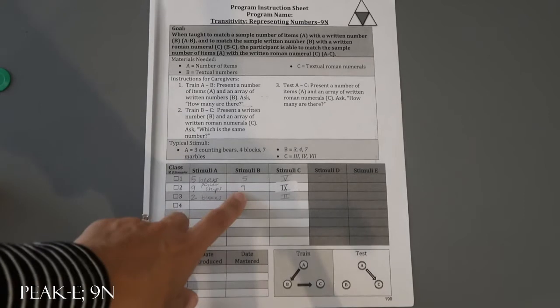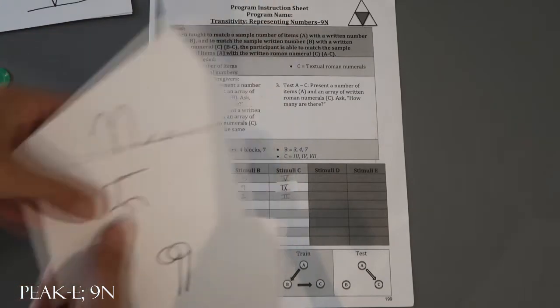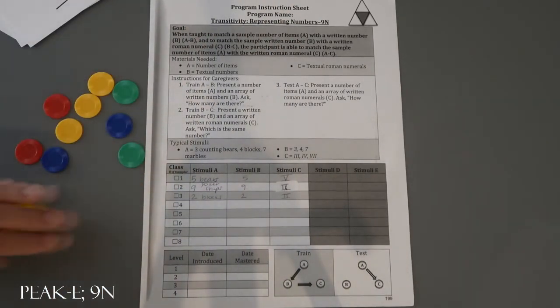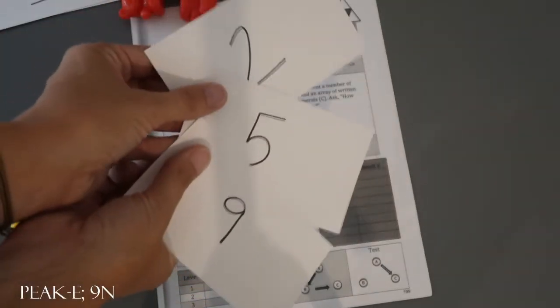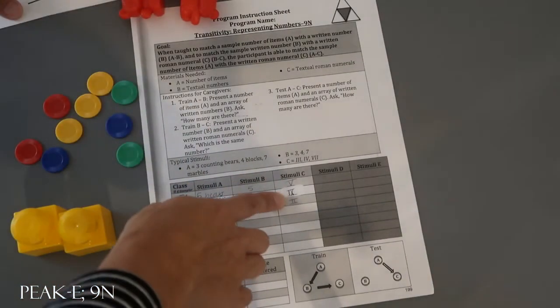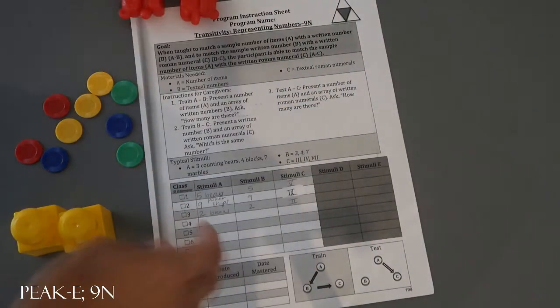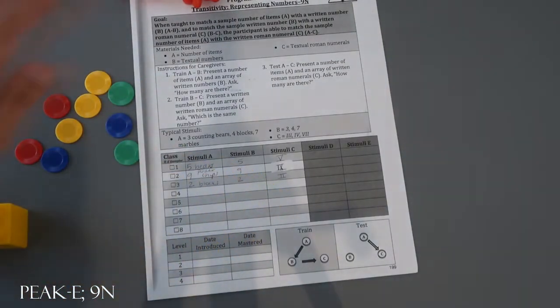For B to C, you're going to have, as I showed you, for stimuli B those written numbers. Stimuli A are your items in different numbers, stimuli B are your number cards, and stimuli C are your roman numeral cards. So A to B was the items with your array of written numbers asking how many are there.